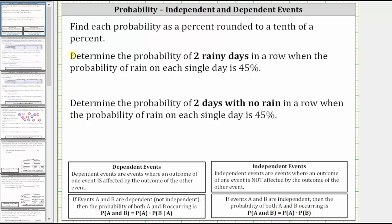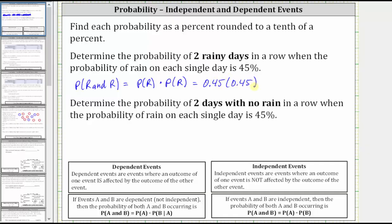So in our case, the probability of rain on the first day and rain on the second day is equal to the probability of rain on the first day times the probability of rain on the second day. In both cases, the probabilities are 45%, which as a decimal is equal to 0.45, giving us 0.45 times 0.45 for the probability of two rainy days in a row.